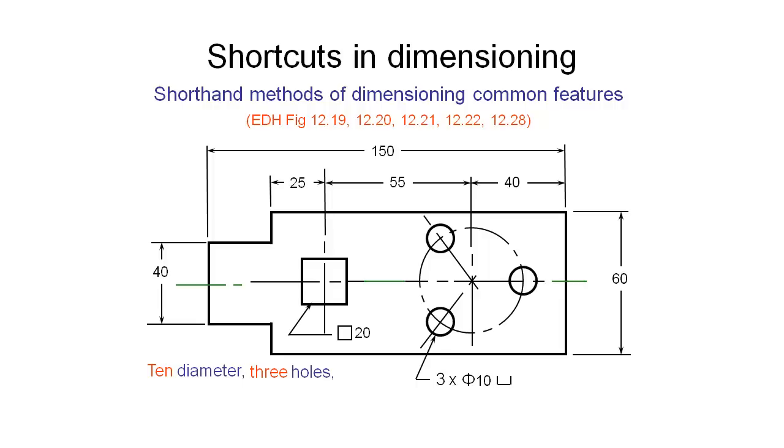We can also use additional treatments to the holes. In this case, this symbol here, which looks like a bucket, indicates a spot face. So that is an additional manufacturing process that we might want to do, particularly on parts that are cast and might be rough on the surface.